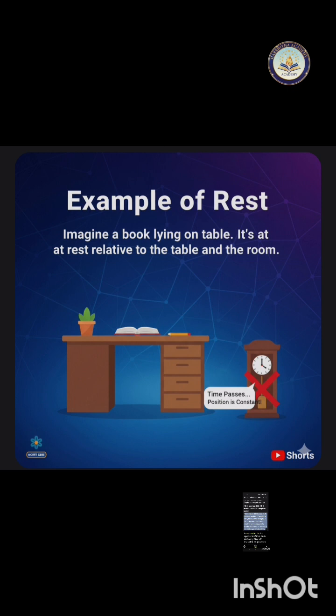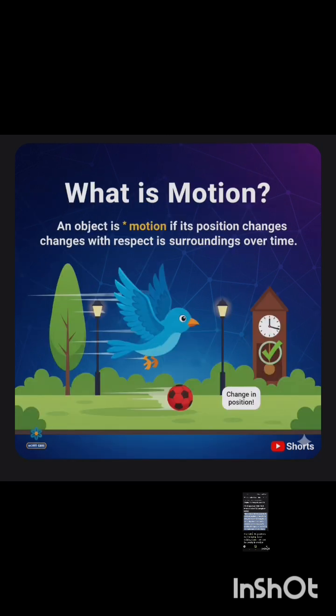Now, motion is the opposite. If that book suddenly flies off the table, its position is changing. A car driving down the road is clearly in motion because its location changes with respect to the road, trees, and buildings.